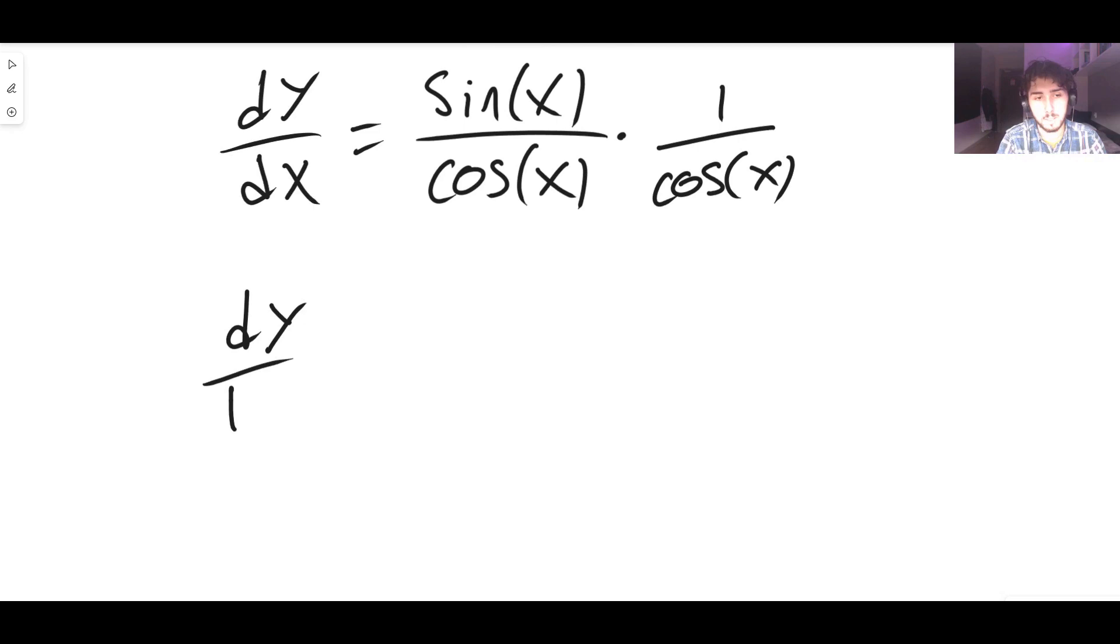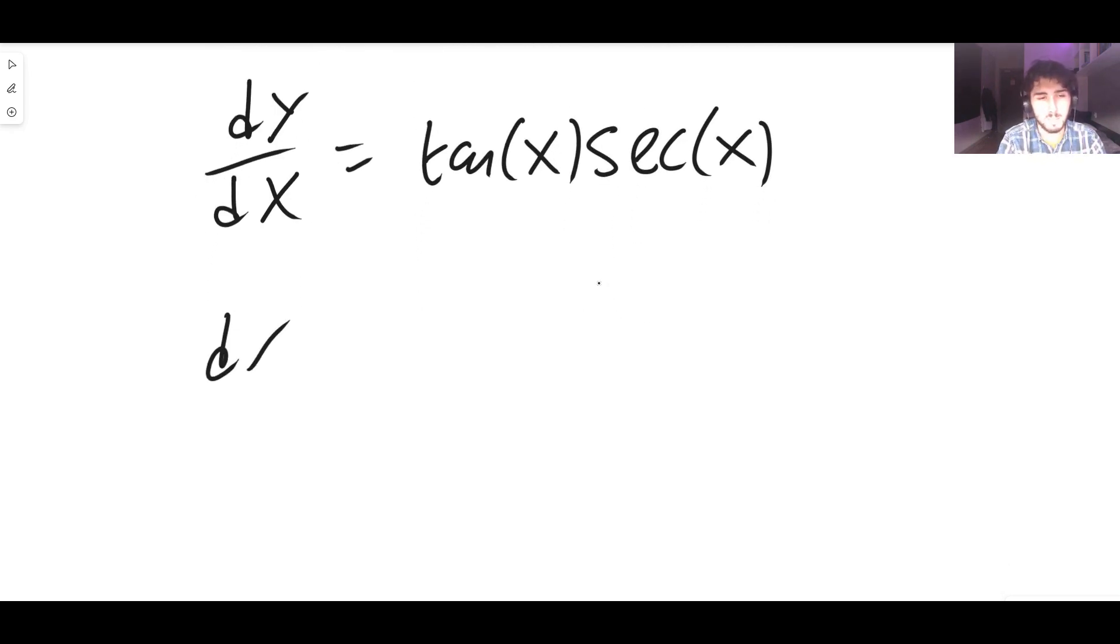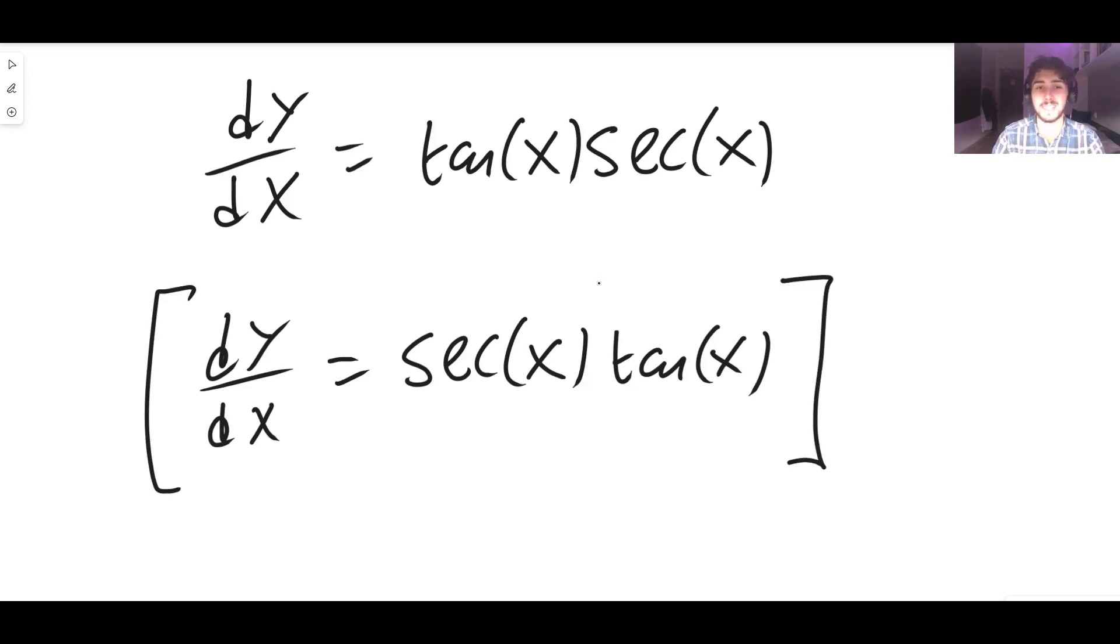That means that dy/dx because what's sine over cos? It's tan. It's tan x multiplied by sec x. So dy/dx, I like to write it the other way around but obviously it doesn't matter. The derivative of sec x is actually just sec x tan x and that's your answer. So the derivative of sec x is just sec x times tan x.